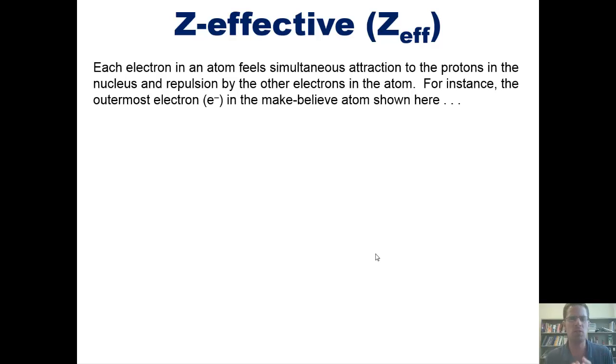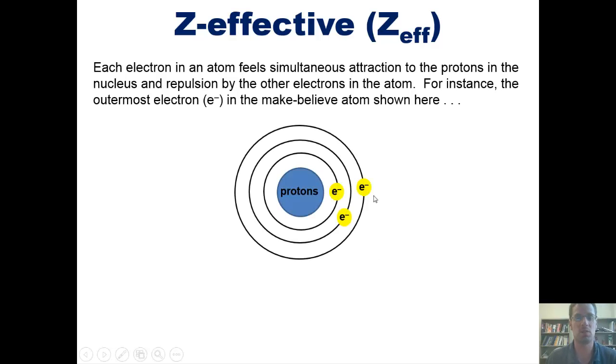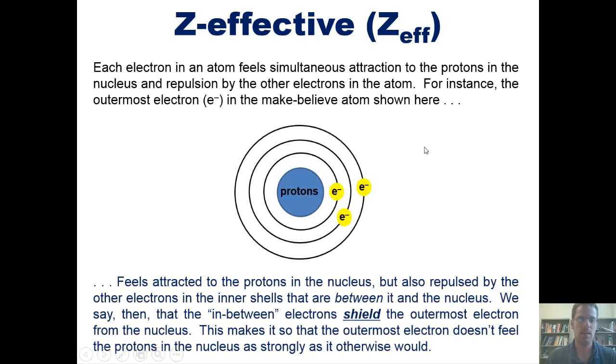But at the same time, they also feel some degree of repulsion from the other electrons that are around them and between them and the nucleus, because electrons all have negative charges and negative charges repel each other just like in magnets. For instance, the outermost electron in this make-believe atom would feel attracted to the protons in this nucleus, but it would also feel repulsed by the other electrons in these innermost shells that are between the outermost electron and these protons.